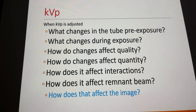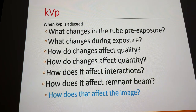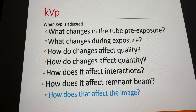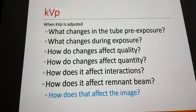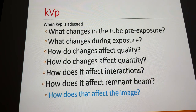With an increase in KVP, we get an increase in quality and quantity — interactions inside the tube increase across the board, we get more of everything. In the patient, increasing KVP increases penetration, giving us an increase in the remnant beam. How that affects the actual image is minimal because the computer processes out overexposure, so the image you see changes minimally.